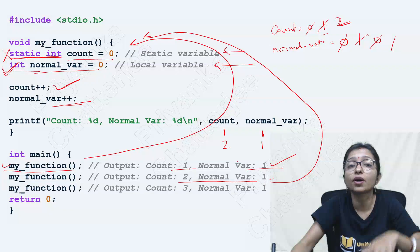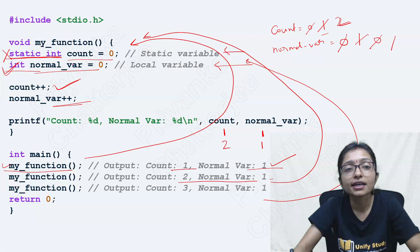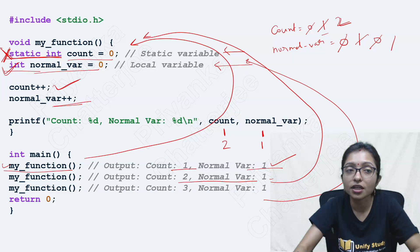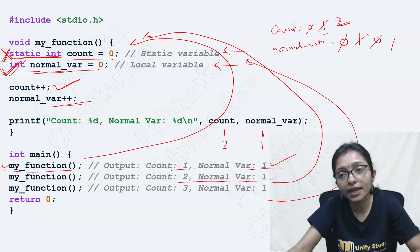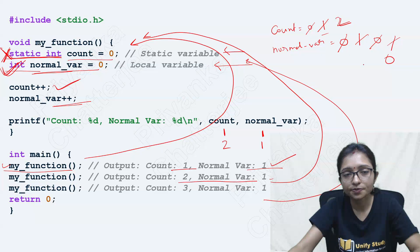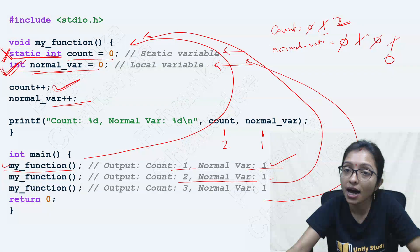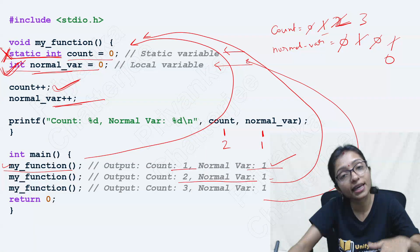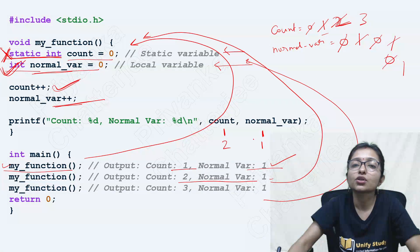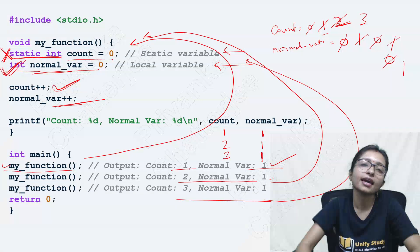Third call: again the static initialization line will not execute. The local variable line will execute, so it is again 0. The count variable will do count++, meaning the last value was 2, updated to 3. And the normal variable is again 0, incremented to 1. So that is why you are getting 3 and 1 on the third call.